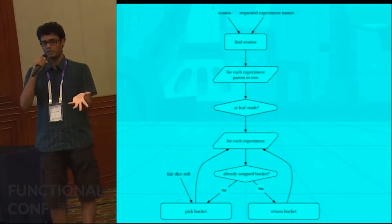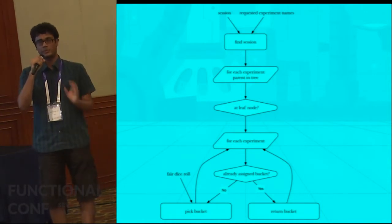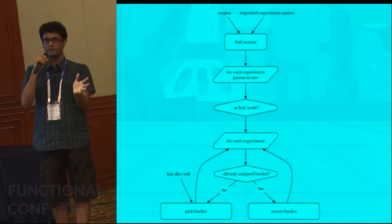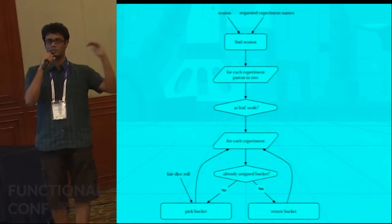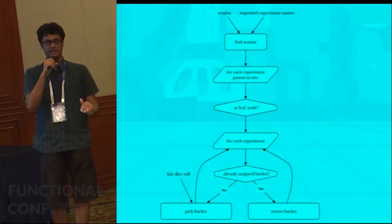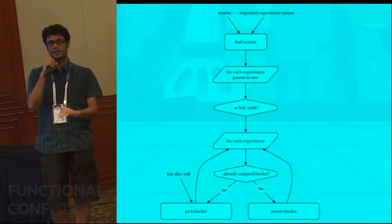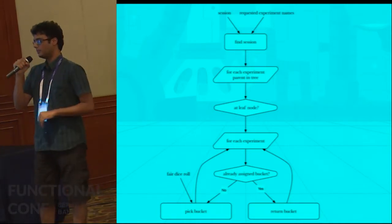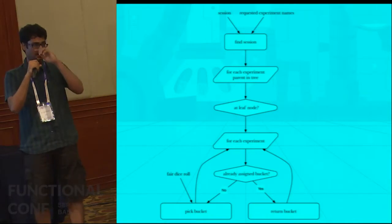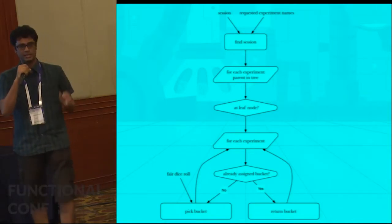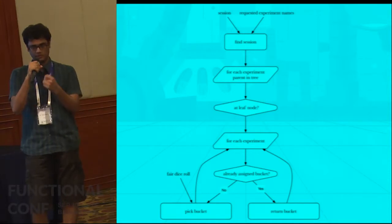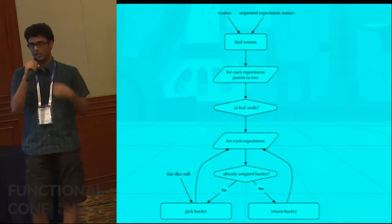One of the more interesting parts of the API service is how we bucket users. Bucketing is basically a tree traversal — we walk the tree breadth-first, and for each level of experiments we bucket you. The key guarantee is that if you have been given a bucket before, we give that same bucket back to you — during this session, on that device, on that group of devices. If you haven't been assigned to this experiment before, we roll a die and put you into one of the treatments.